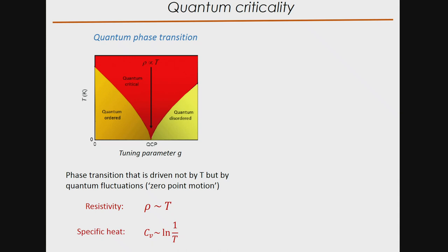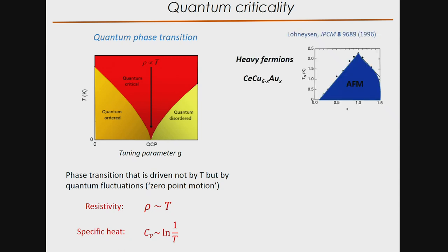I'm not going to spend a lot of time on quantum critical points, but this is the famous phase diagram of temperature versus tuning parameter — where the tuning parameter can be doping, pressure, or magnetic field. You start with a quantum ordered phase; when you apply the tuning parameter, that phase disappears at the quantum critical point. At this QCP, the resistivity may be linear down to very low temperature, and another hallmark is a diverging log(1/T). This was first discovered in the archetypal heavy fermion compound CeCu₆.